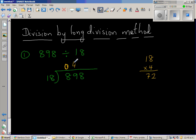When you write 4 here, this is in the tens place. So this is 18 times 40, which is 720. Then you take away 720 from 898. 8 take away 0 is 8, 9 take away 2 is 7, so 178.